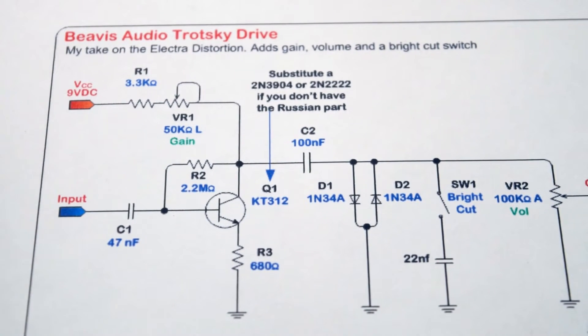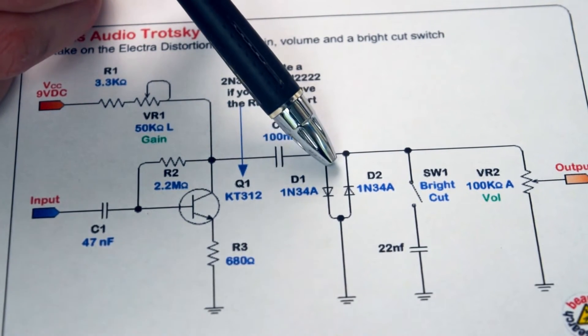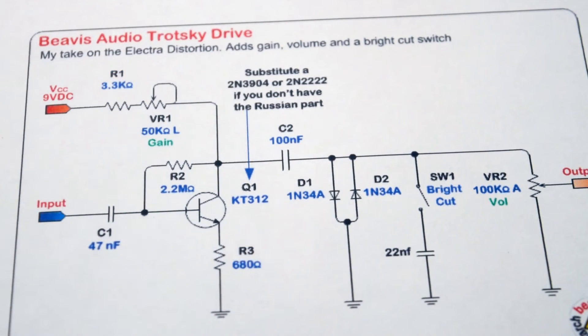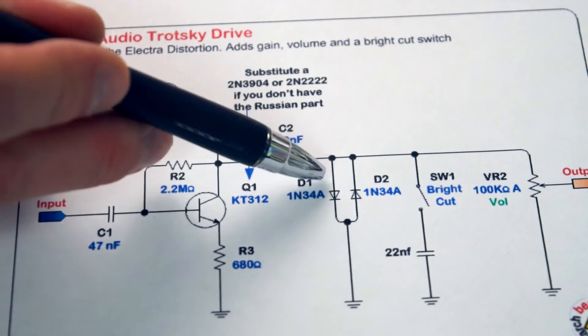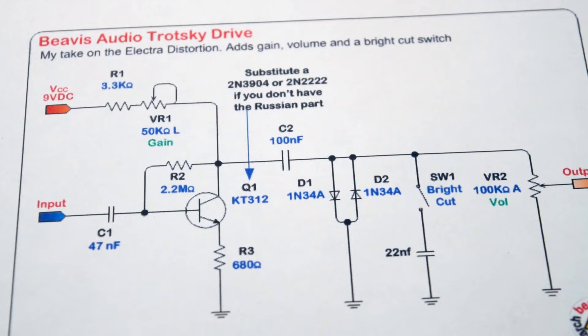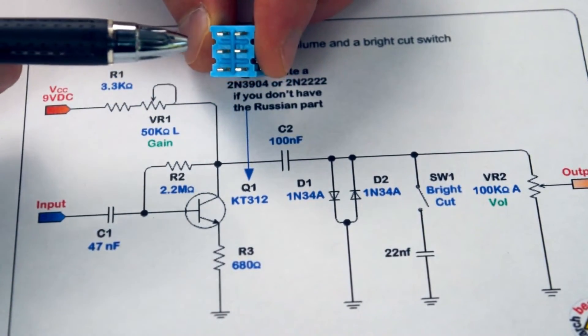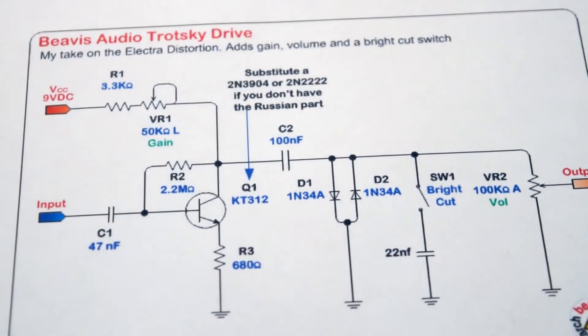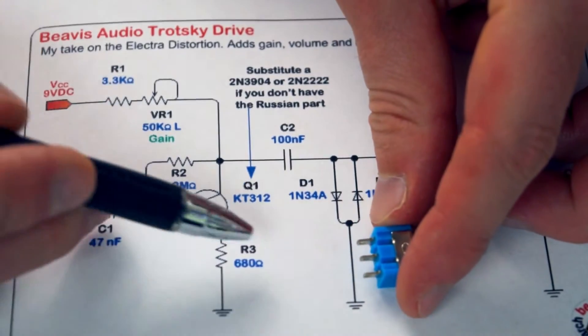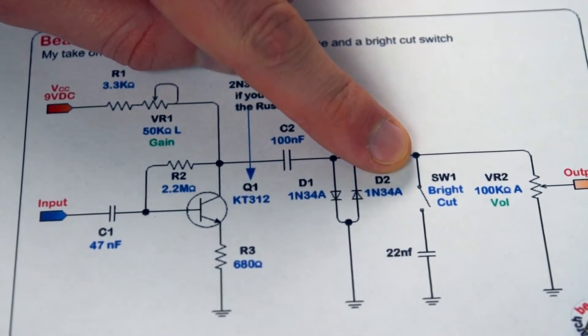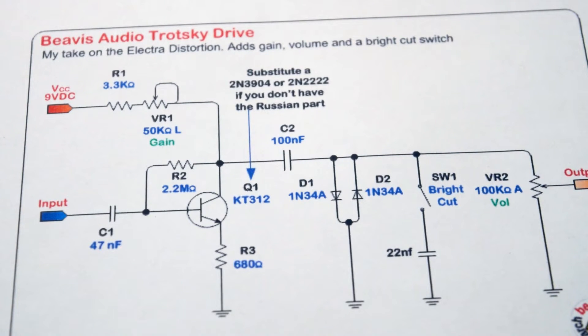But then our new addition, and this version is, this is the Beavis Audio Trotsky drive, which is kind of, I say it's an electric distortion, but it's got some tweaks. But then we run into our clipping diodes. So now this is different than the baz fuzz. The clipping diodes were here, whereas now we've got them back here. And so I think I could just simply put these clipping diodes on the switch, and I could, again, use another one of these double pull, double throw switches, where I've got a diode on each one, and in the up position, they go nowhere, and in the down position, they go to ground. Or I could even probably just get away with a single pull switch and put this single switch right here to either send it to ground or send it nowhere. And then we go to a bright cut if we want, and then we go out to the volume control.